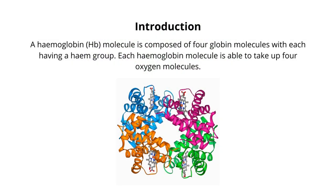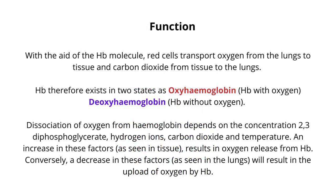A hemoglobin molecule is composed of four globin molecules, with each having a heme group. Each hemoglobin molecule is able to take up four oxygen molecules. With the aid of the hemoglobin molecule, red cells transport oxygen from the lungs to tissue and carbon dioxide from tissue to the lungs.